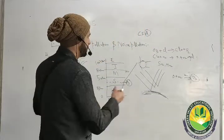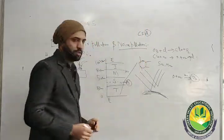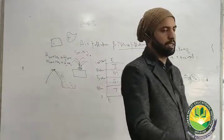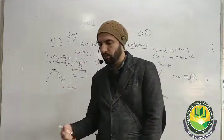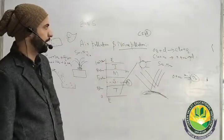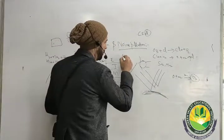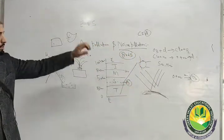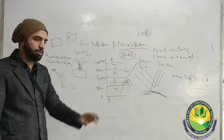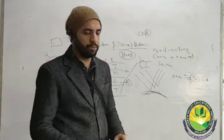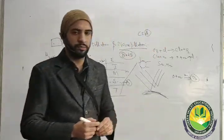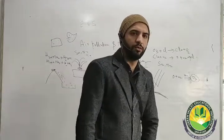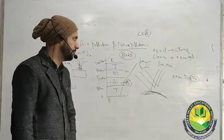Coming to the second topic — noise pollution. We use industries, cars, and other machines that produce sound. Sound above 80 decibels is known as noise. So noise pollution can be defined as unwanted sound above 80 decibels.